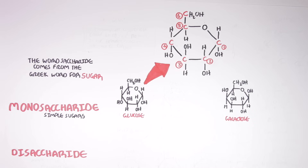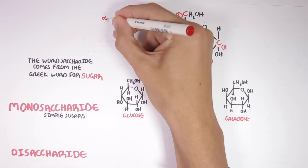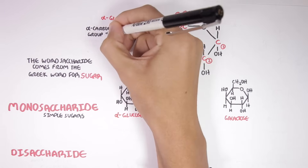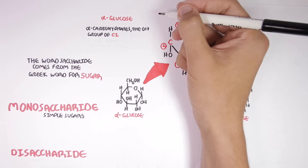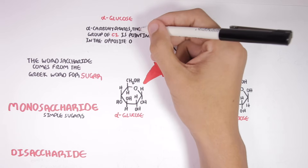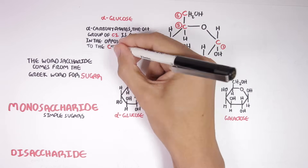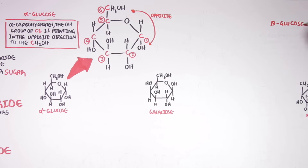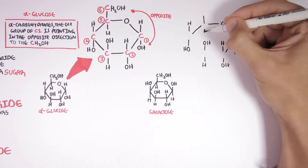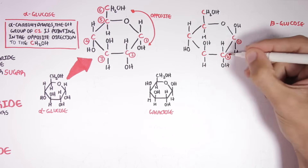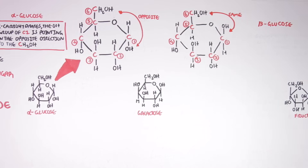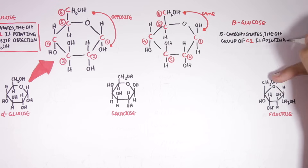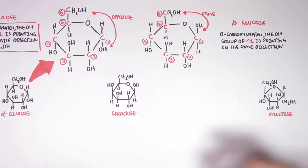This particular type of glucose is actually an alpha glucose because it has an alpha configuration. Alpha carbohydrates are where the hydroxyl group — the OH group of carbon number one — is pointing in the opposite direction to carbon number six. There is also a beta glucose, where the hydroxyl group of carbon number one and carbon number six are pointing in the same direction.